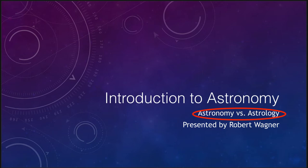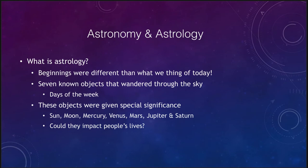So what we're going to look at in this lecture is compare how these work and how they have changed over the ages. Starting off, let's look at some of the basics. What do we mean by astronomy and astrology? Astrology is the study of the different objects that wandered through the sky.